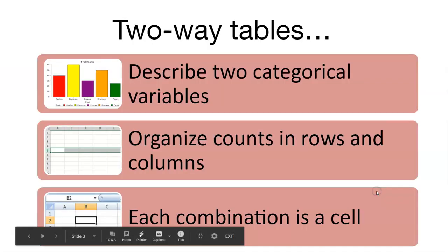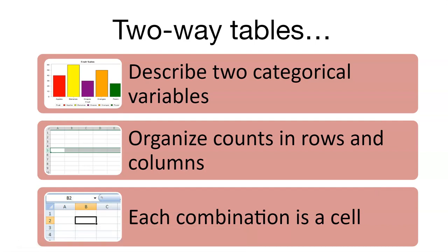Two-way tables describe two different categorical variables. In agriculture and natural resources, we have lots of categorical variables — think about the species of an animal, or whether a tree is alive or dead. Two-way tables allow us to easily synthesize data collected from categorical variables. They are organized in counts and rows. Think about an Excel spreadsheet where we have different levels of one variable, different levels of another variable, and we organize the counts inside each cell, with each combination found in that cell.